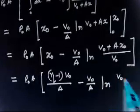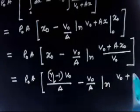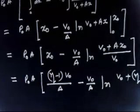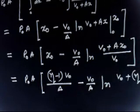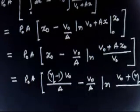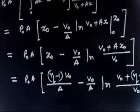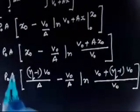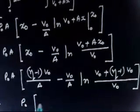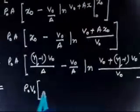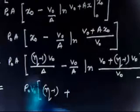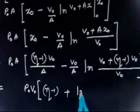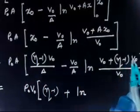Continuing the evaluation: at x = x0, the argument of the logarithm is V0 + A·(eta-1)V0/A = V0 + (eta-1)V0 = eta·V0. At x = 0, it is V0. So the logarithm term becomes ln(eta·V0 / V0) = ln(eta). The A factors cancel out, leaving P0·V0·(eta - 1) - P0·V0·ln(eta).